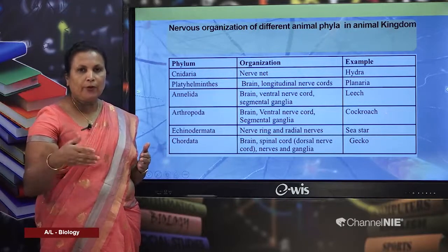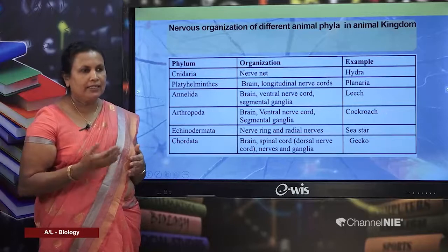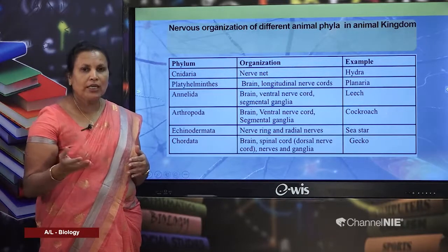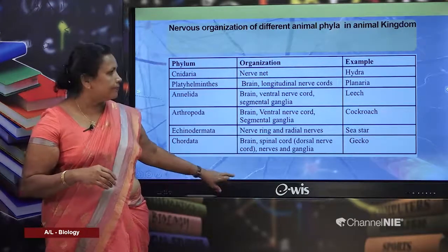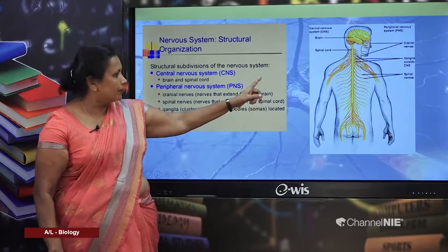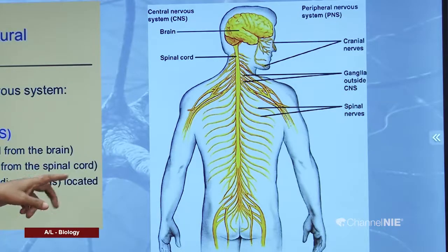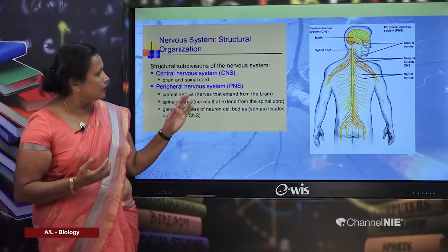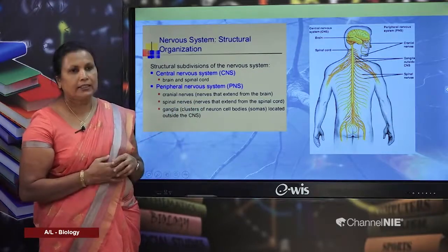Now we move to Competency 5.6.2: nervous organization in the human body. The human nervous system has two major components: the central nervous system (CNS) and the peripheral nervous system (PNS). The CNS consists of the brain and the spinal cord. The peripheral nervous system consists of nerves and ganglia, including cranial nerves and spinal nerves.